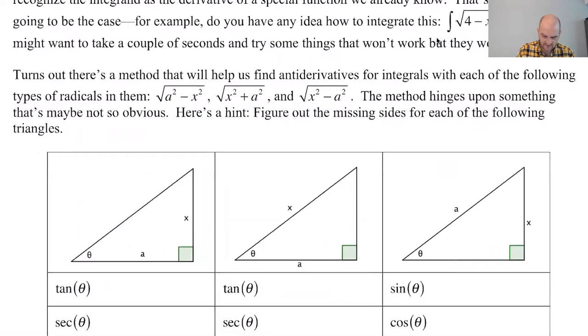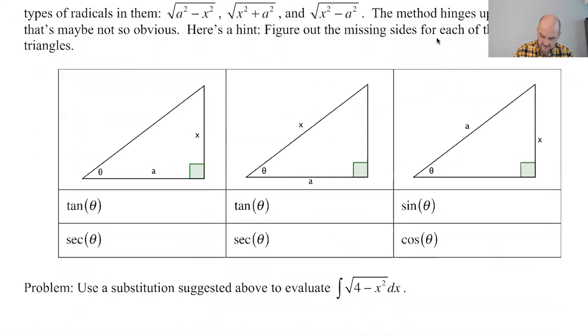We look at all of these kinds of radicals: radical a squared minus x squared, radical x squared plus a squared, radical x squared minus a squared. Look at all of them as if they are a leg or hypotenuse of a right triangle and draw your triangle. Once you draw your triangle, you can come up with some trig things.